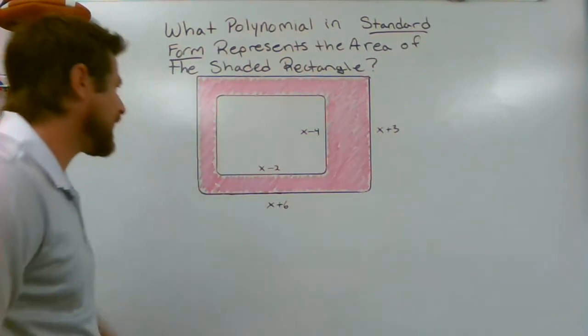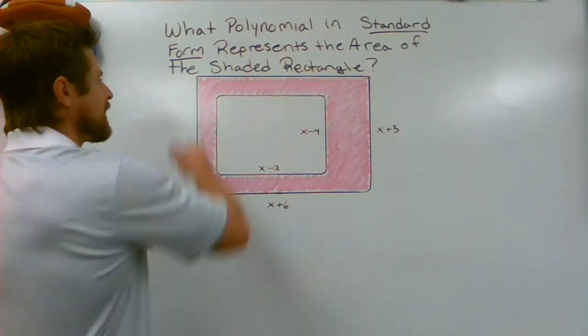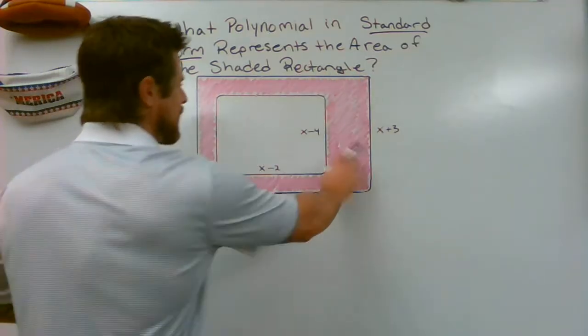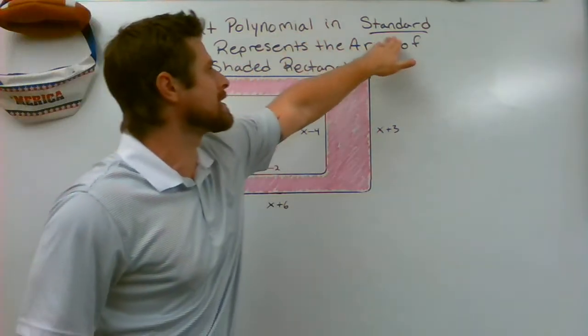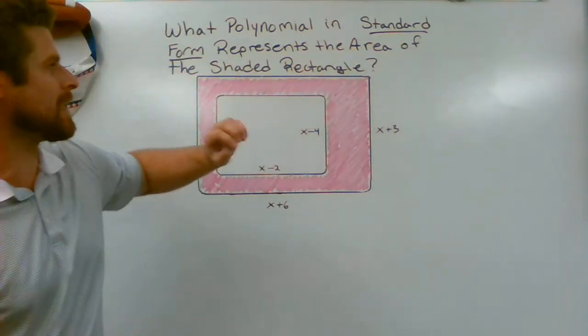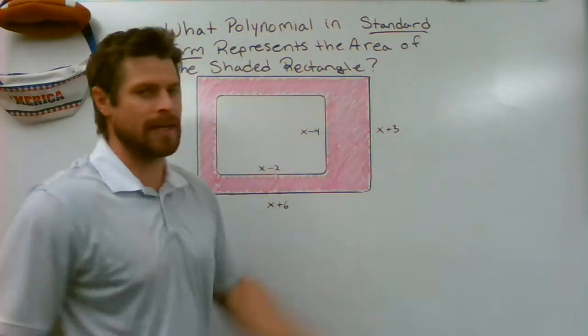What do we have? We've got a smaller rectangle and a larger rectangle, which is shaded in with pink. What is the polynomial in standard form representing the area of the shaded rectangle?